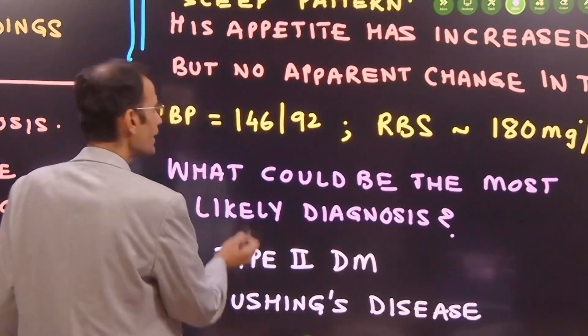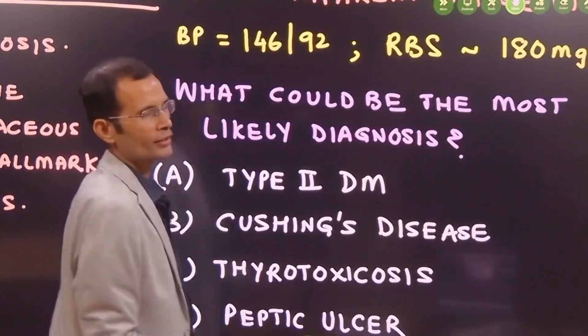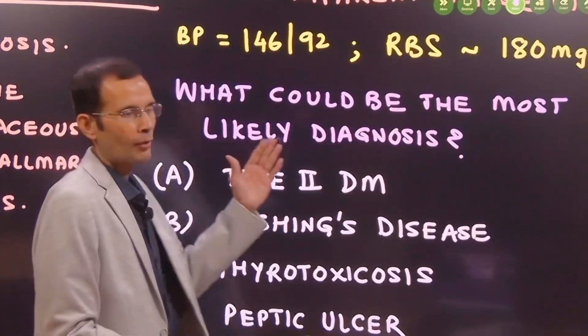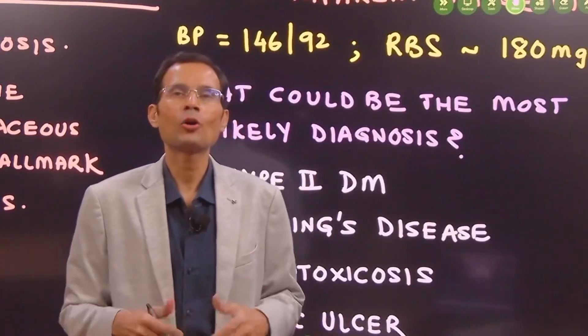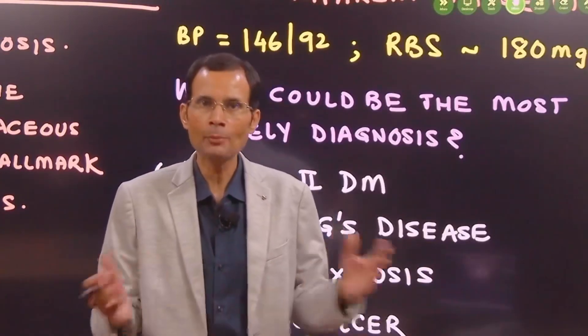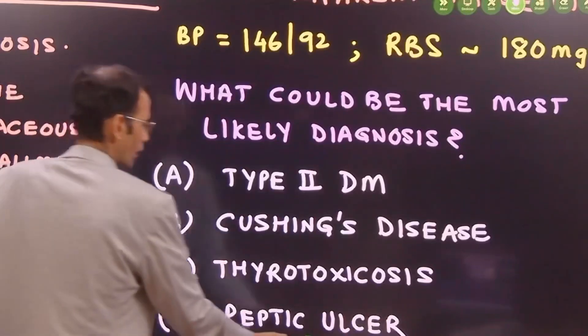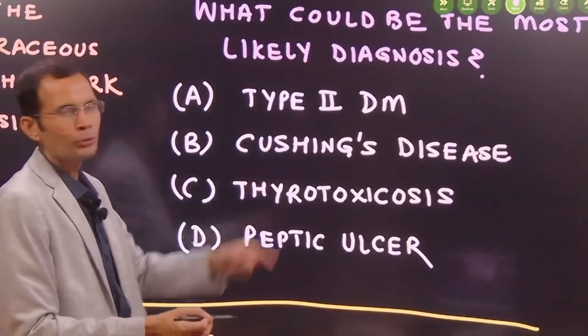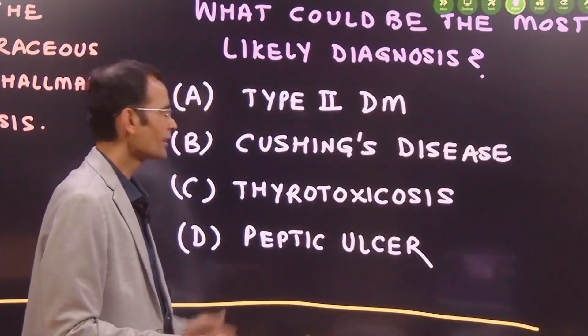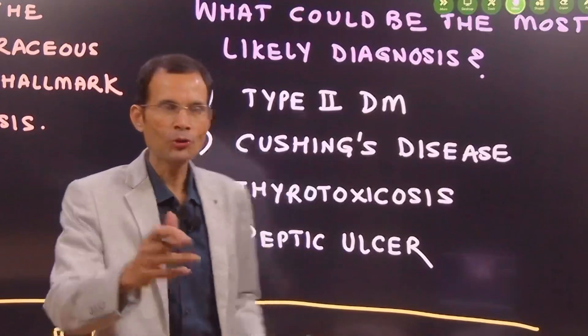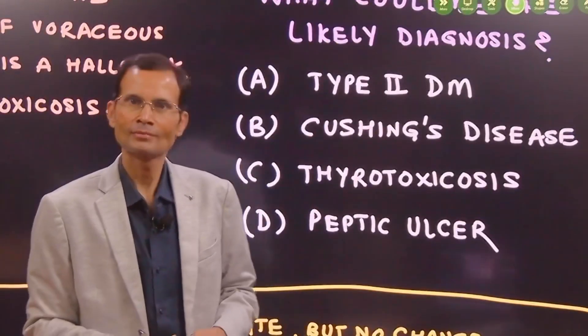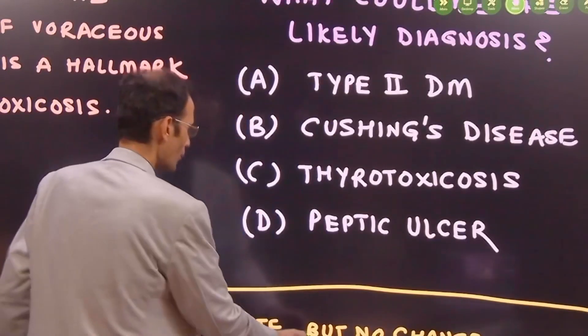What could be the most likely diagnosis? That is the case. And let's see the options for our PG entrance preparation. And also then we will also have a look at the questions that can be asked at the first prof level. 10 marks question. Here are the options. Type 2 diabetes mellitus or Cushing's disease or thyrotoxicosis or peptic ulcer. You want to answer that? Here are the options. Answered?